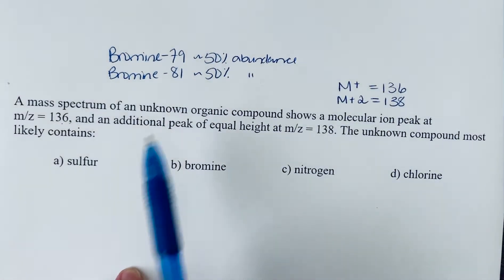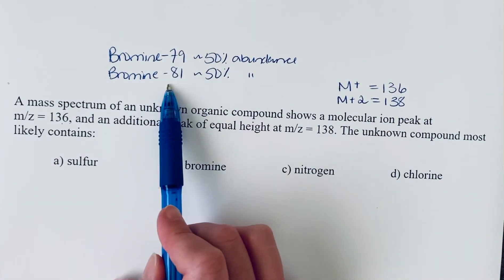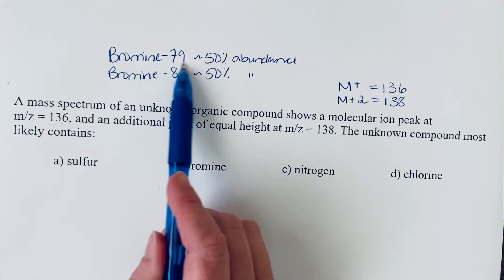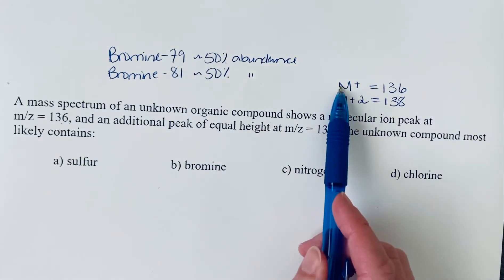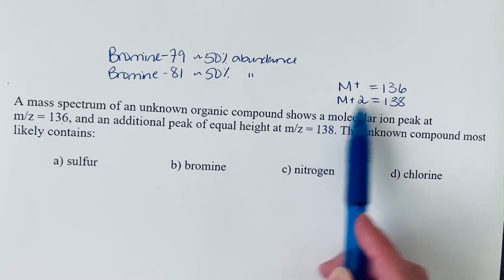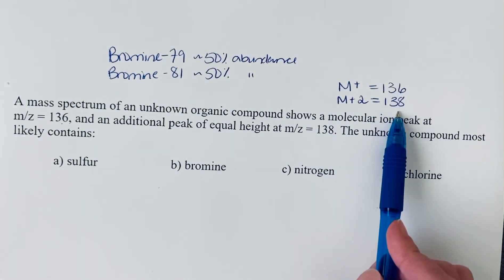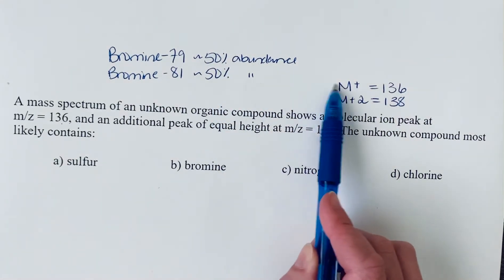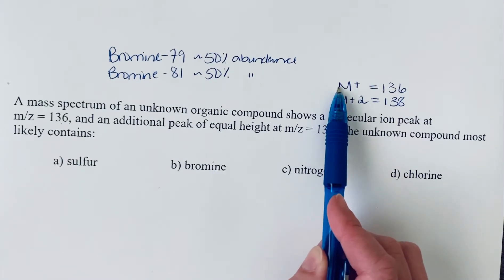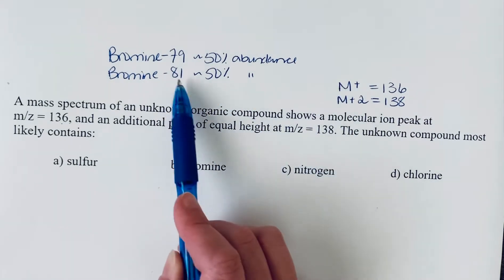If you have one bromine in your molecule, your molecular ion peak is calculated on the lower molecular weight isotope. You would also have an M+2 peak approximately equal in height because at 50% abundance, you have just as much likelihood of the molecule reaching the detector with bromine-79 as with bromine-81.